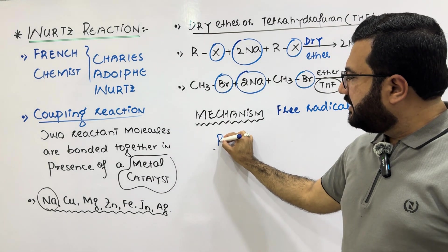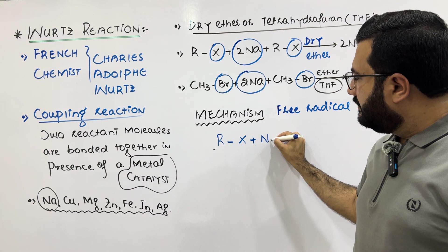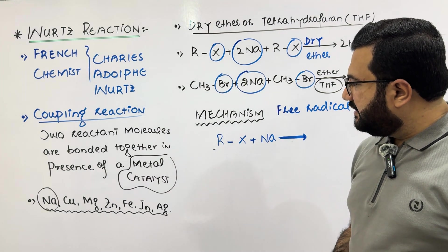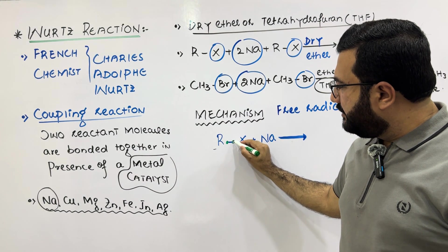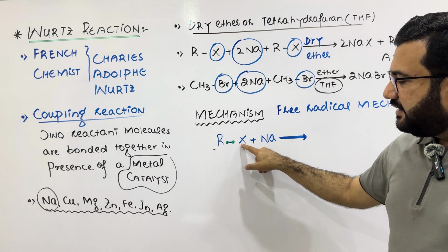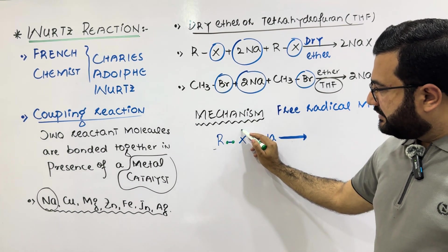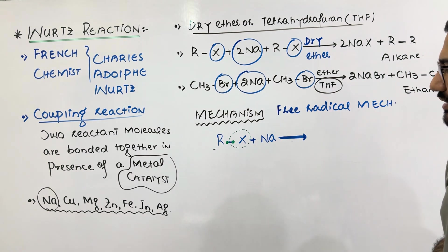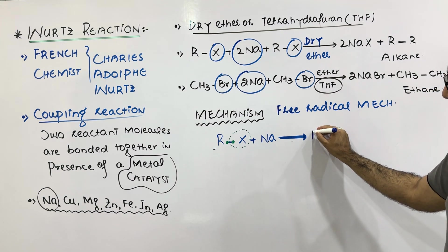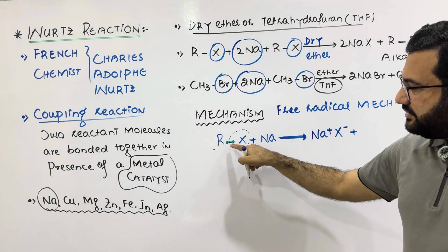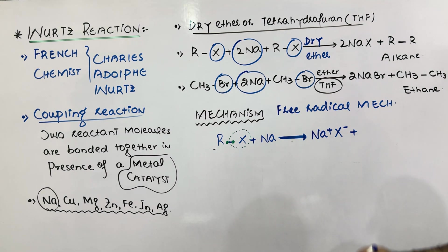First of all, the alkyl halide molecule reacts with sodium. In the bond between the alkyl group and the halogen atom, there are two shared electrons. Sodium is highly electropositive — it will lose an electron and form a bond with X. The halogen will take its shared electron and use it in bonding with sodium. You will get Na⁺X⁻ sodium halide. When the halogen takes its shared electron, the alkyl group carbon will have an unshared electron, so it becomes a free radical.